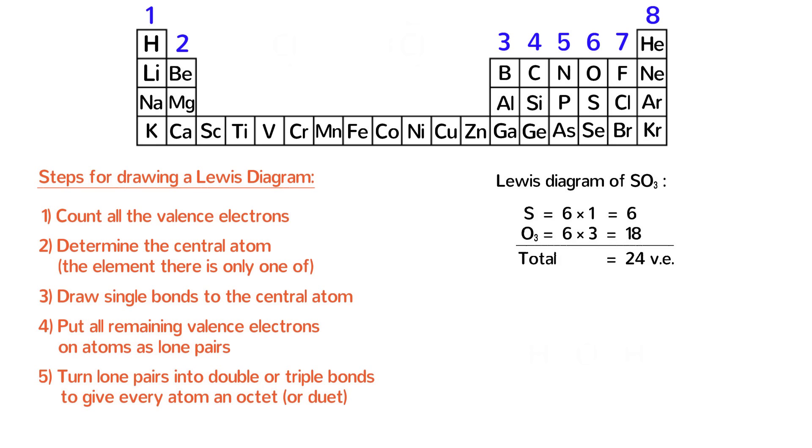Step 2. Determine the central atom. This time, sulfur is the central atom because there is only one sulfur in the molecule. We write sulfur in the middle with the three oxygen atoms all around it. Step 3. Draw single bonds to the central atom.